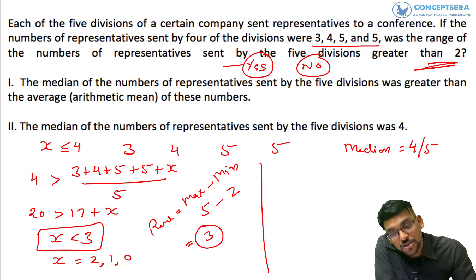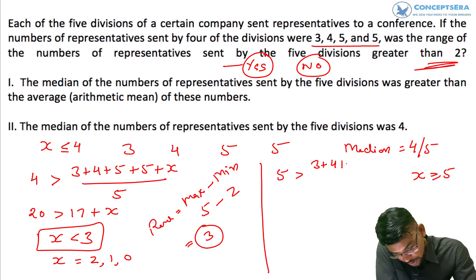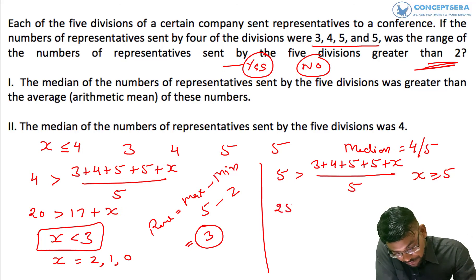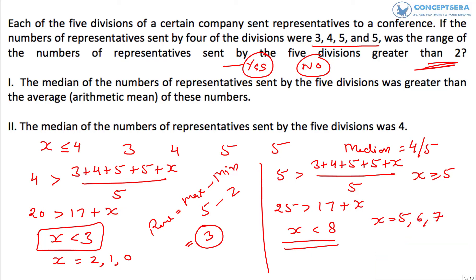Now, what if the median is 5? Then the mean must be less than 5: (3 + 4 + 5 + 5 + x) / 5 < 5, which gives 25 > 17 + x, so x < 8. When x < 8, x can be 5, 6, or 7. If x is 5, the range is 5 minus 3 = 2. If x is 6, the range is 6 minus 3, which is more than 2. So we're getting both 2 and more than 2.